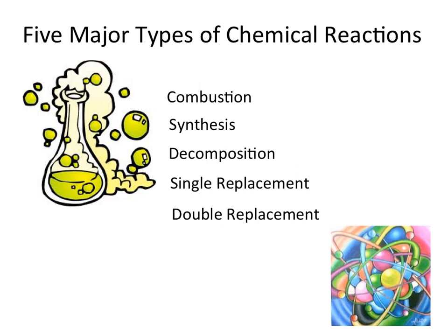We're going to be looking at the five different types of chemical reactions: combustion, synthesis, decomposition, single replacement, and double replacement. We're going to look at both the reactants and products associated with each of these reaction types, as well as learn how to predict products for each of the different types.